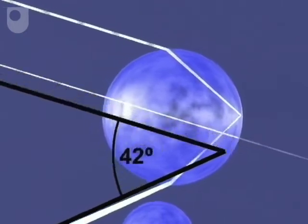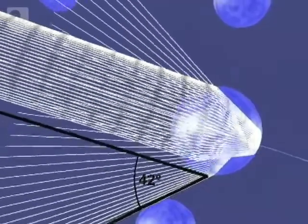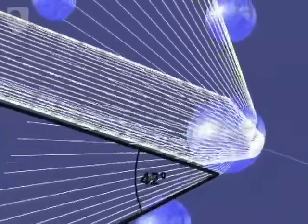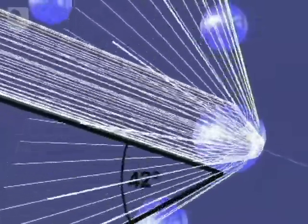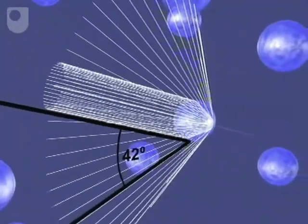Of course the drop isn't just a circle, it's a sphere. And with light rays entering all around the front of the drop, the emerging light forms a 42-degree cone, with the concentration of light at the surface of the cone.